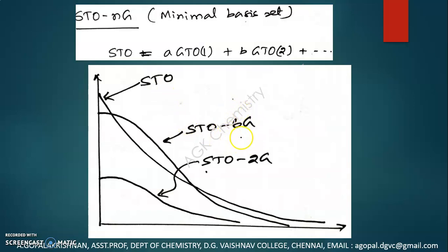The purpose of using Gaussian functions is that if you use Gaussian functions, it is very easy to calculate the two-electron integrals. Two-electron integrals are very difficult to calculate using a Slater type orbital — actually we cannot. But if you take Gaussian functions, then the problem of solving two-electron integrals becomes very easy. If we choose these STO-NG functions as atomic orbital functions to construct a molecular orbital function, then that set is called a minimal basis set.